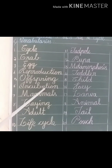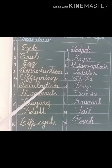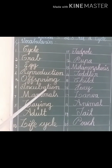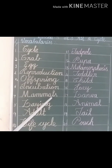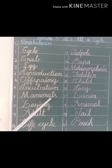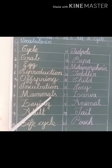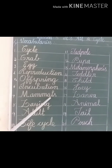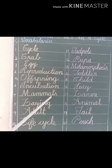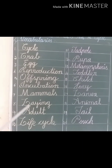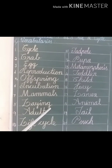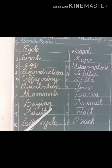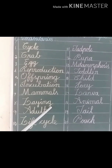Incubation — it means the process of incubating eggs. Mammals — it means an animal of the type that gives birth to new babies. Laying — it means to put something carefully in a particular position.